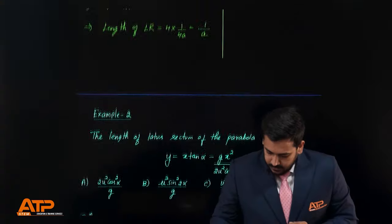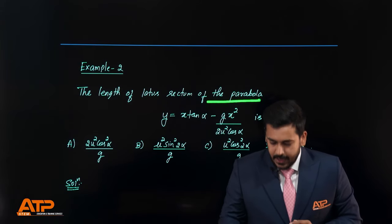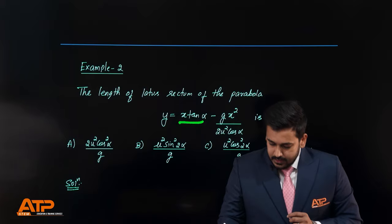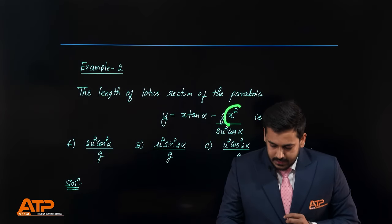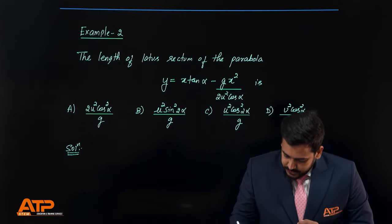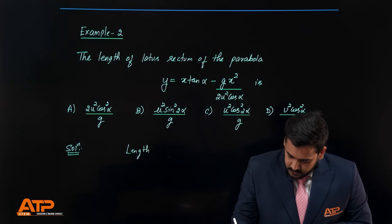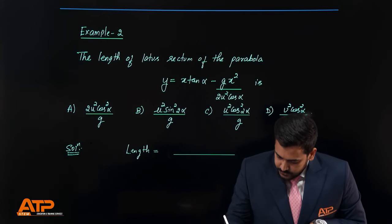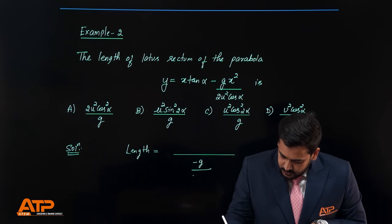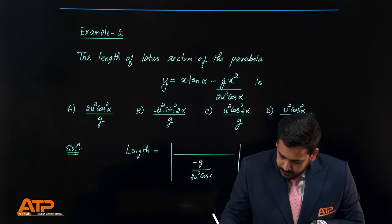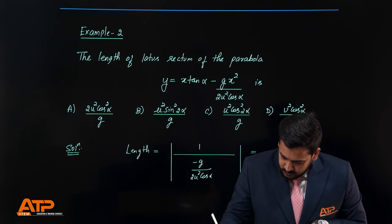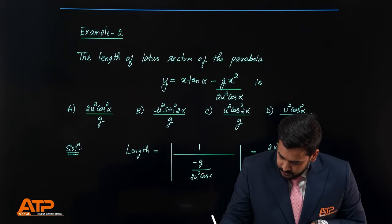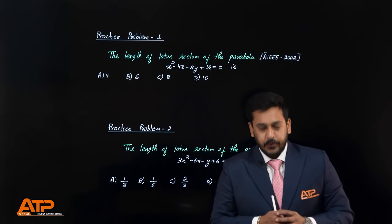For the second example, find the length of the latus rectum of the parabola y = x·tan α − (g / 2u²cos α)·x². Using the trick, the equation is in x² form, so the coefficient of x² goes in the denominator — that is −g / 2u²cos α — and the coefficient of y, which is 1, goes in the numerator. So the length of the latus rectum is 2u²cos α / g.